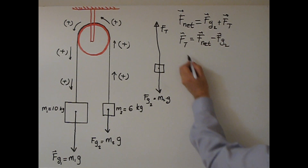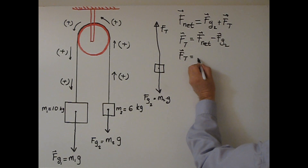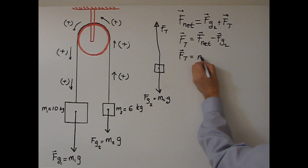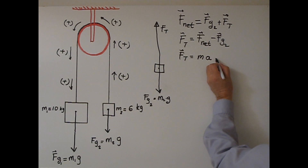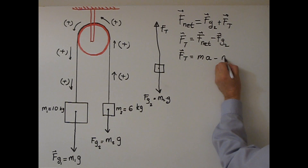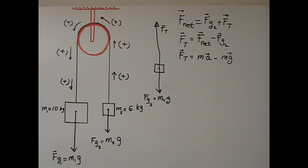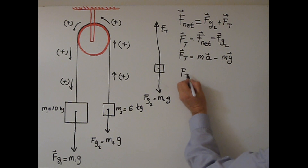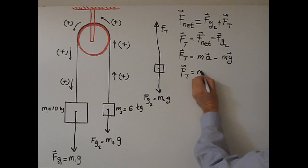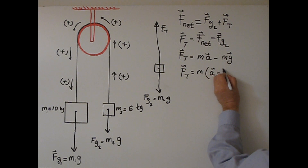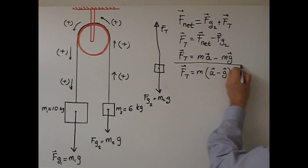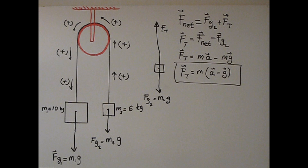So F tension equals M times A minus M times G. Factoring out M gives F tension equals M times (A minus G). This is the general tension formula in vector notation. Whether we use the right side or left side, we will get the same tension.